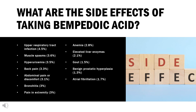Common adverse effects in clinical trials were: Upper respiratory tract infection 4.5%, Muscle spasms 3.6%, Hyperuricemia 3.5%, Back pain 3.3%, Abdominal pain or discomfort 3.1%, Bronchitis 3%, Pain in extremity 3%, Anemia 2.8%, Elevated liver enzymes 2.1%, Gout 1.5%, Benign prostatic hyperplasia 1.3%, Atrial fibrillation 1.7%, and less than 1% Tendon rupture at 0.5%.